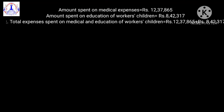Amount spent on medical expenses is rupees 12,37,865. Amount spent on education of workers' children is equal to rupees 8,42,317. These two statements we will write first. Now, what we have to find out here is the total expenses spent on medical and education of workers' children.